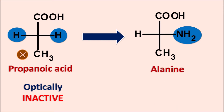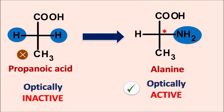Now because of this amino group, the alpha carbon becomes chiral, therefore alanine is optically active. In this way, an optically inactive compound is going to become an optically active compound by replacement of a hydrogen. Here you can see that in propanoic acid, two hydrogens are there and any of the hydrogens can be replaced with the amine group to produce alanine, which is optically active.